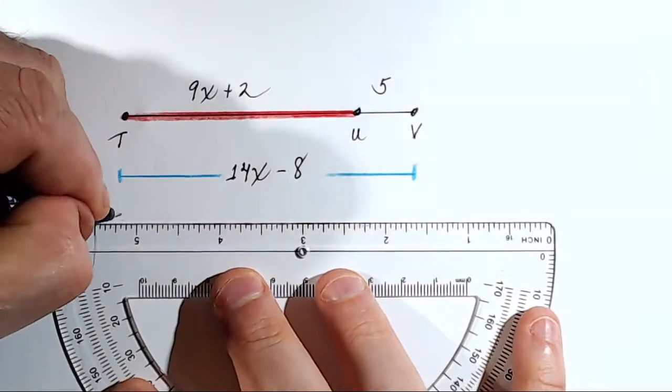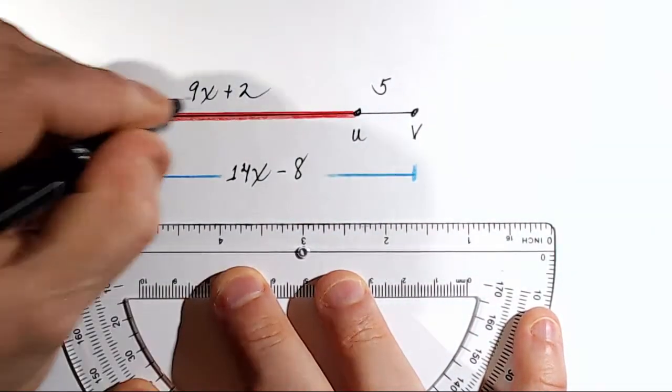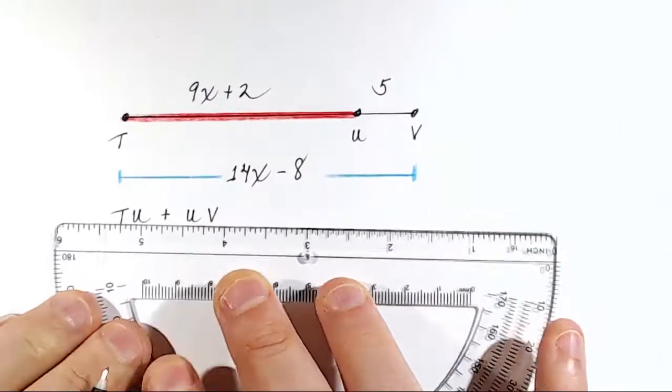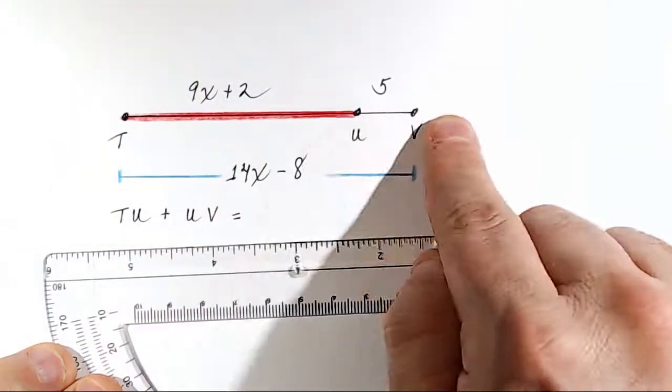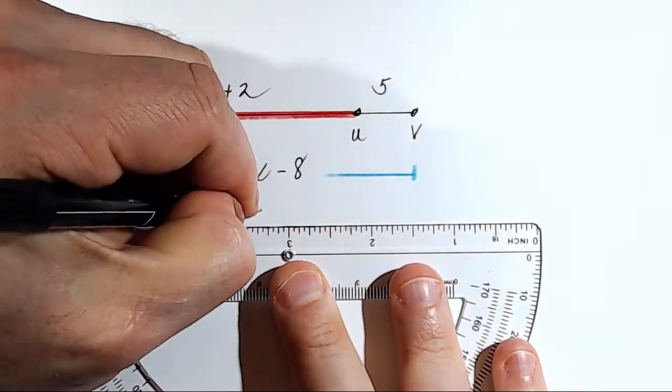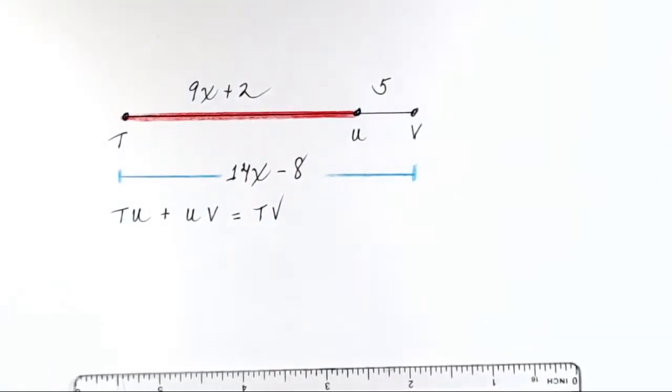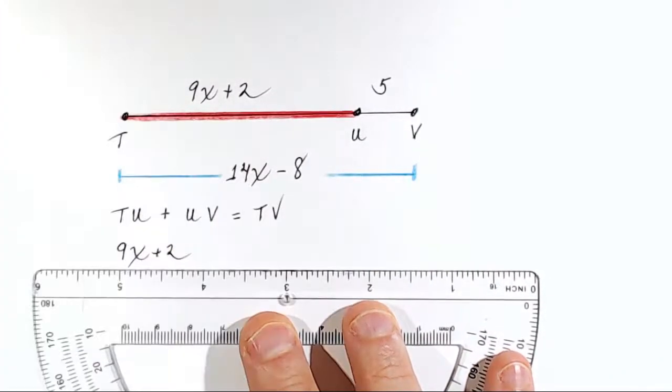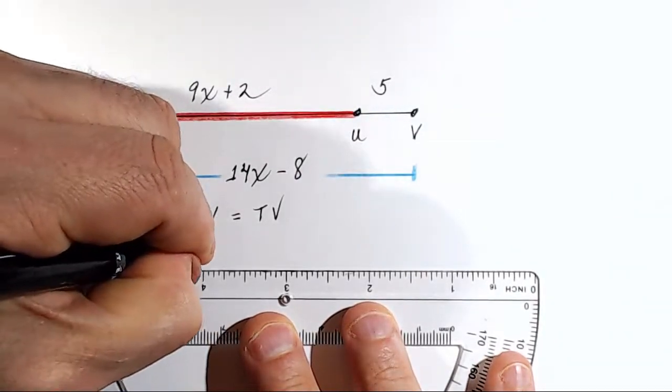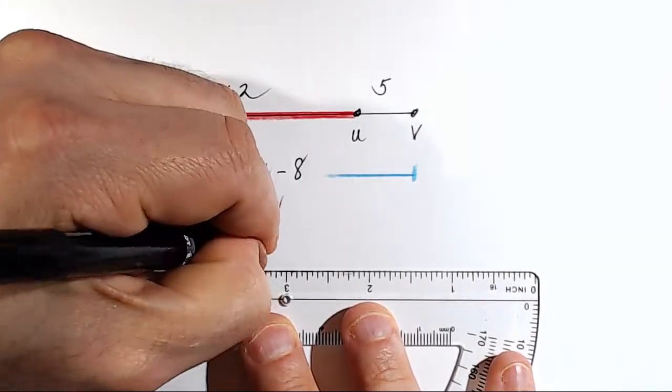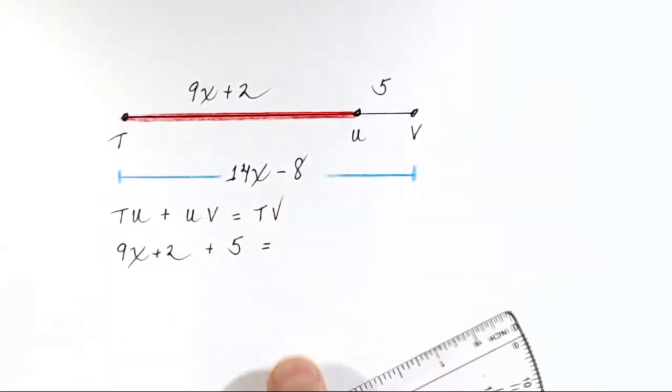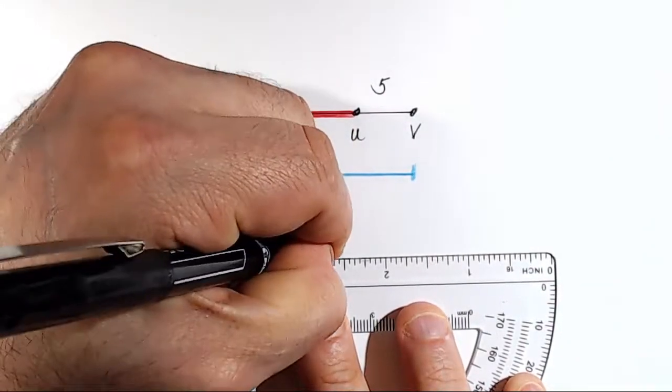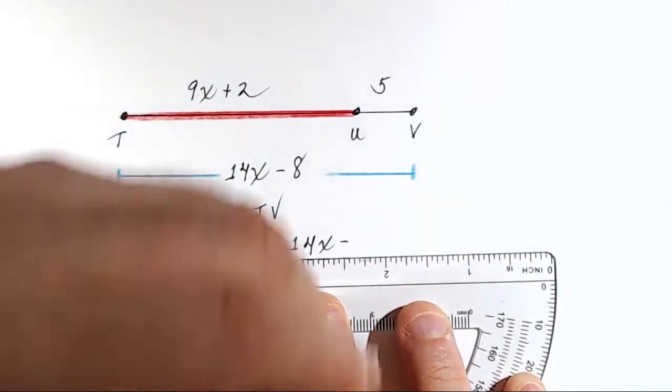All right, let me write that out. So, TU, right here, the red, plus UV, right here, is equal to TV. Okay, so now let's substitute in the values. TU is given as 9x plus 2. UV is given as 5, so I'm going to put plus 5, and I'm going to set that equal to this little algebraic expression right here, 14x minus 8, which represents the total distance.